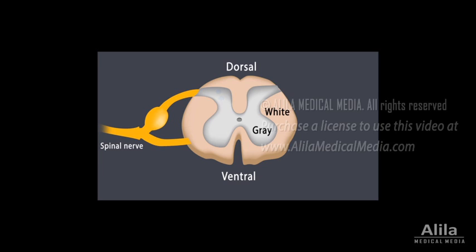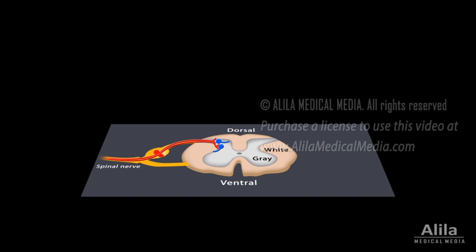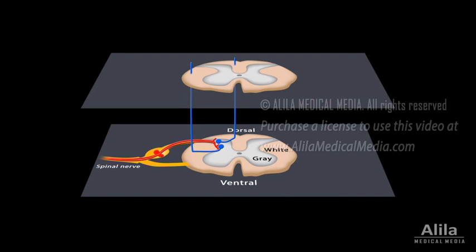The gray matter contains cell bodies and dendrites of neurons. This is where neurons synapse and transmit information to each other. The white matter, on the other hand, is made of bundles of axons and serves to conduct information up and down the cord. These bundles are organized into specific groups with specific functions, forming the so-called spinal tracts.